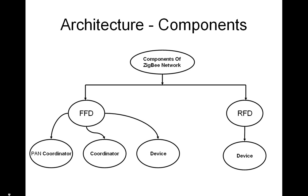The next slide presents a block diagram of the basic components present in a Zigbee network and explains their roles. A system conforming to this standard consists of several components. Two different types of devices can participate in an IEEE 802.15.4 network: a Fully Functional Device (FFD) and a Reduced Functional Device (RFD). The FFD can operate in three modes: serving as a PAN coordinator, a coordinator, or a device, whereas the RFD can operate only as a device.